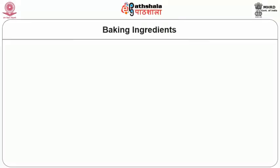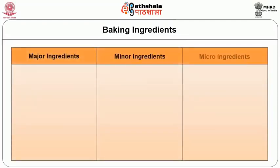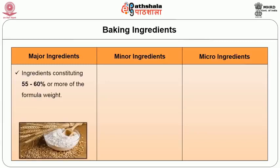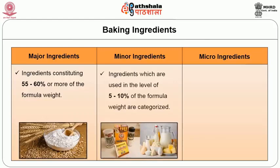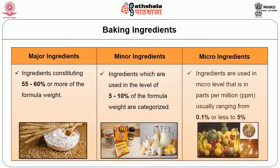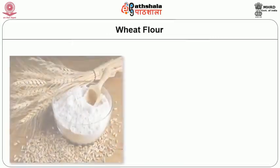The different baking ingredients can be categorized as major, minor, and micro ingredients depending on their level of use in formulations. Major ingredients constitute 55 to 60 percent or more of the formula weight, with wheat flour being the major ingredient. Minor ingredients are used at 5 to 10 percent and include leavening agents, dairy products, starches, and eggs. Micro ingredients are used at 0.1 percent or less to 5 percent. Some ingredients used for their attractive attributes are called characterizing ingredients.